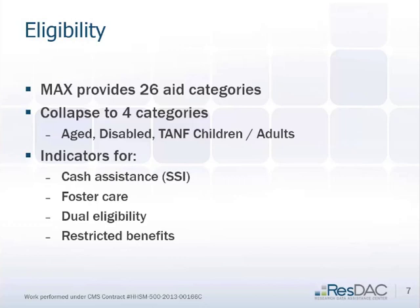We usually calculate an indicator for dual eligibility. Virtually all of the aged have dual eligibility and virtually none of the TANF. The disabled is about 50-50, maybe a little more than 50% with dual eligibility. We'll also look at restricted benefits — the code looks through those restricted benefit flags, and if they have that in any month, it indicates that they have restricted benefits.